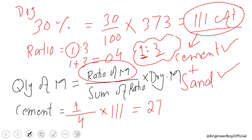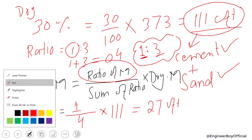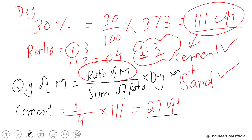Cement cannot be ordered in cft — it's available in bags in the market, so we have to convert. To convert cft to bags, you need to know the volume of one cement bag, which in Pakistan is 1.25 cft. Dividing 27 by 1.25 gives approximately 22 bags of cement.